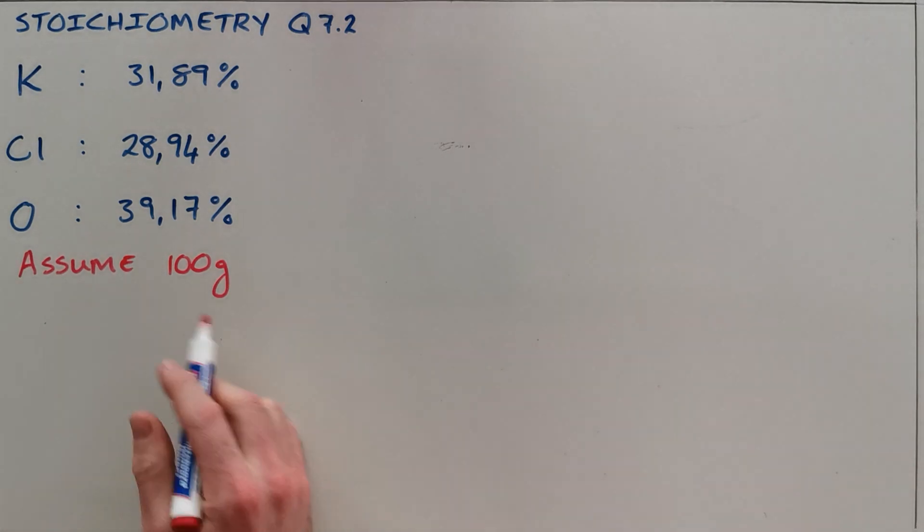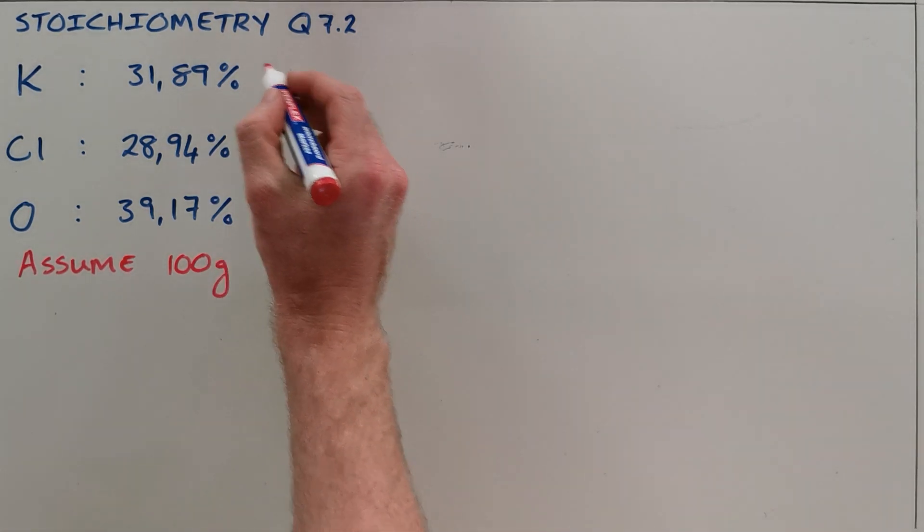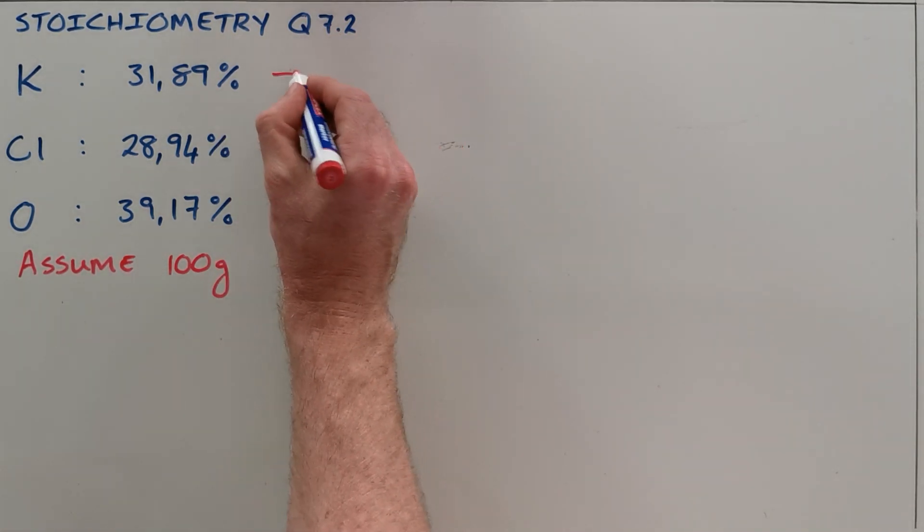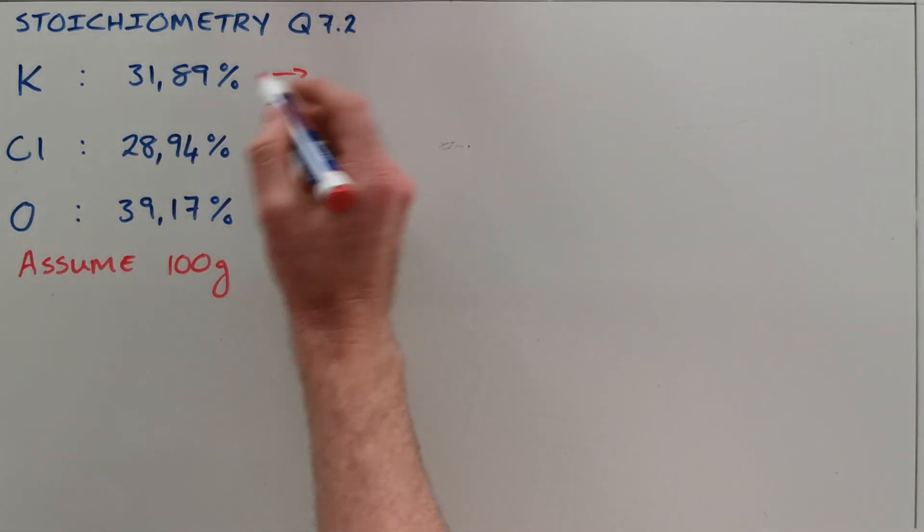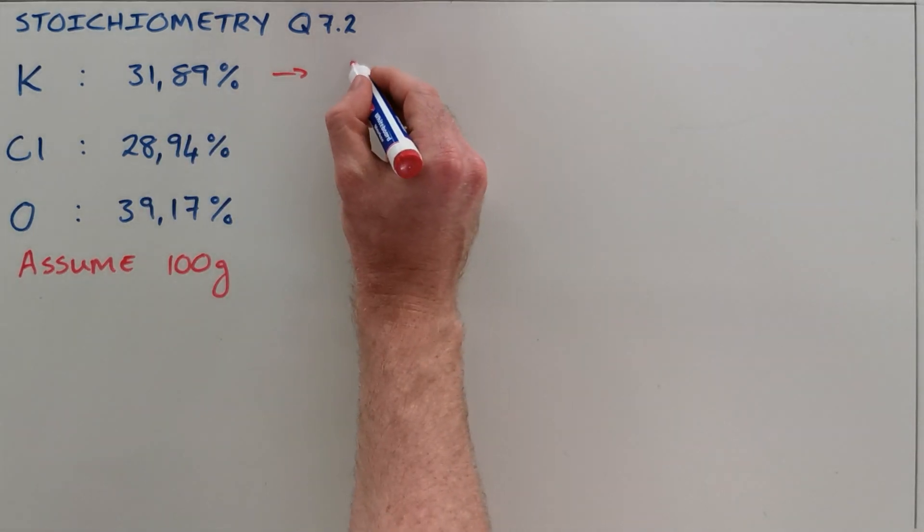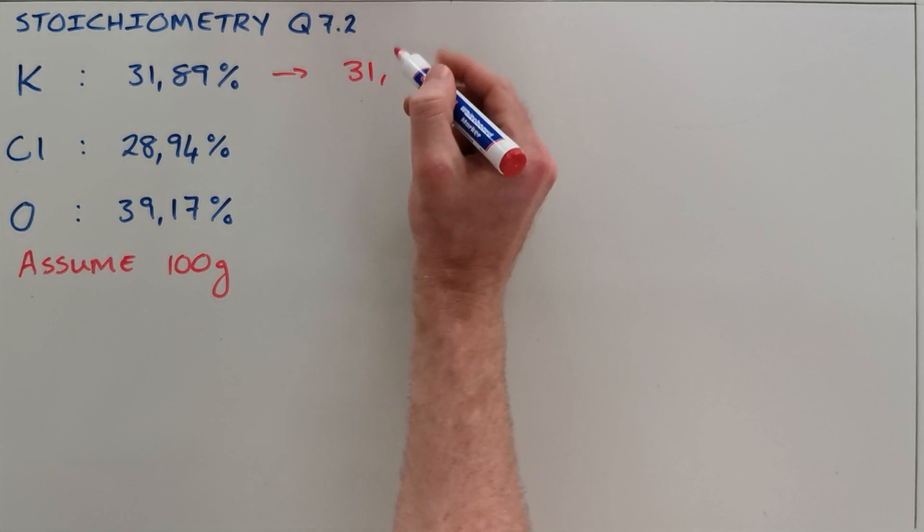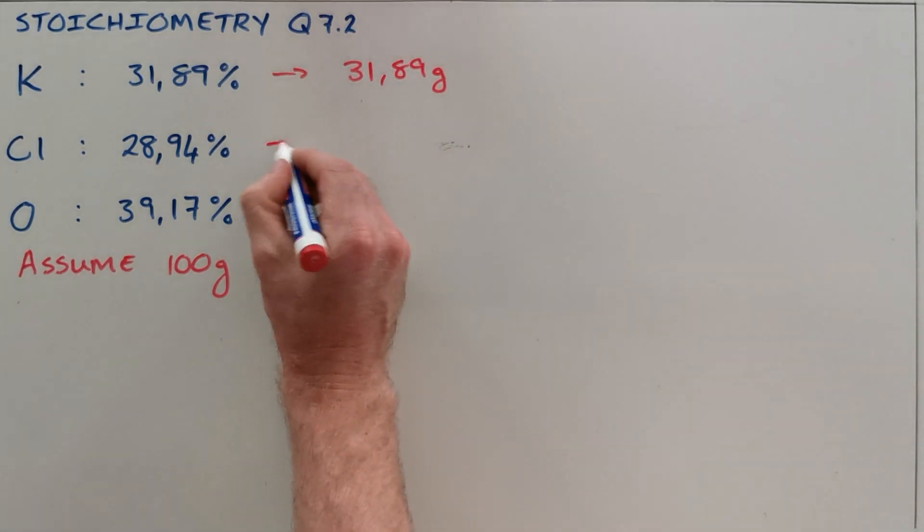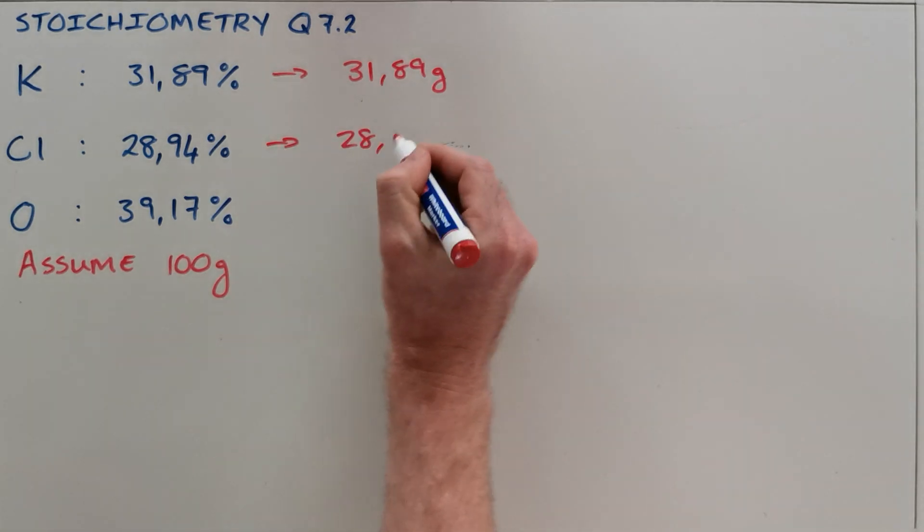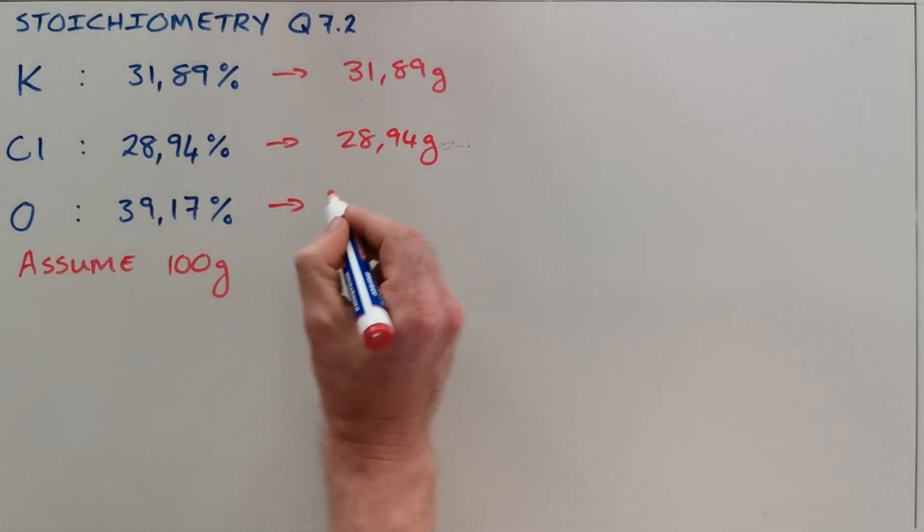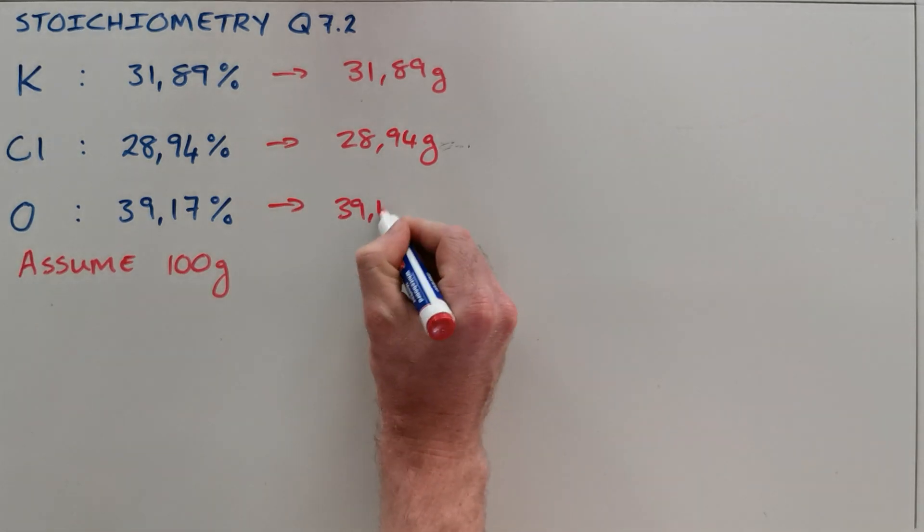You can assume any amount, but we assume 100 because that means we can convert directly from a percentage into a mass. If we had 100 grams of the substance, then we would have 31.89 grams of potassium, 28.94 grams of chlorine, and 39.17 grams of oxygen.